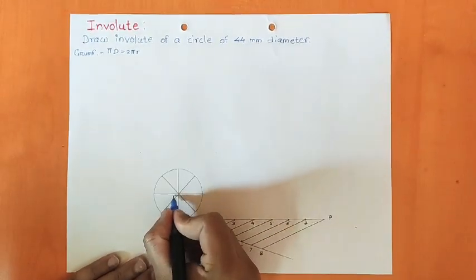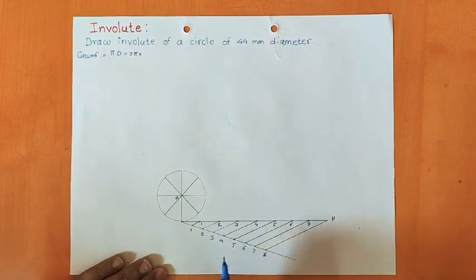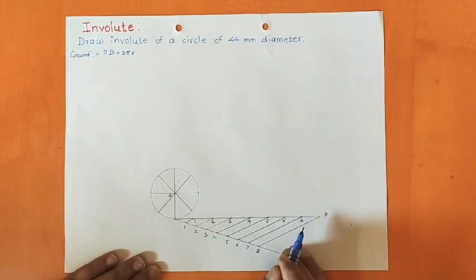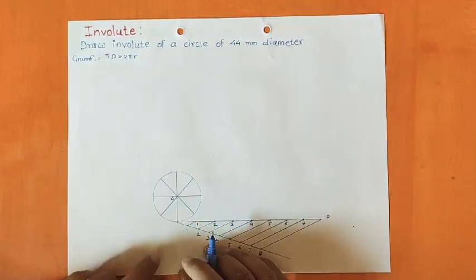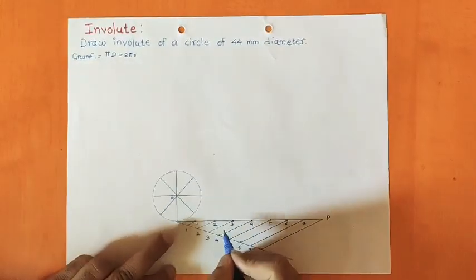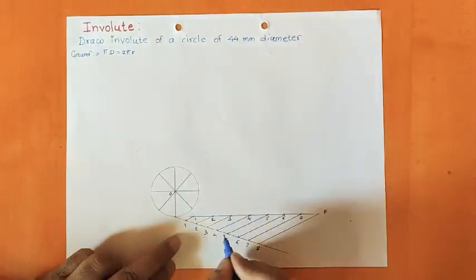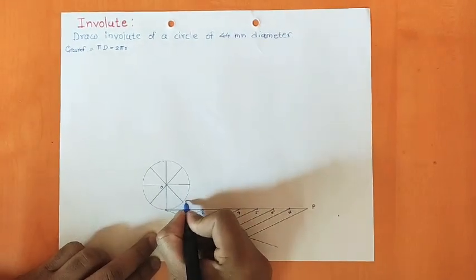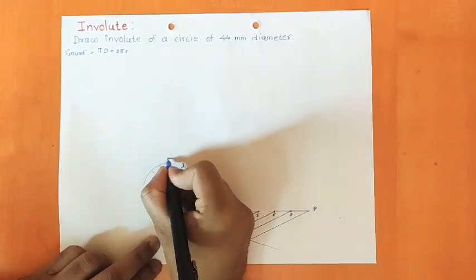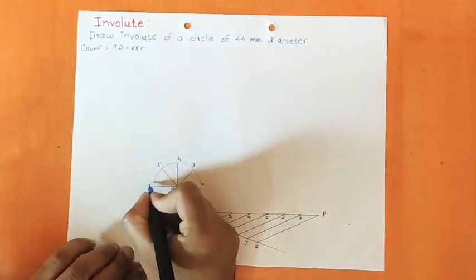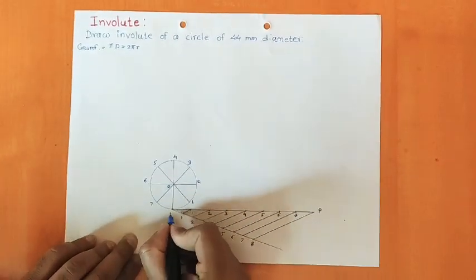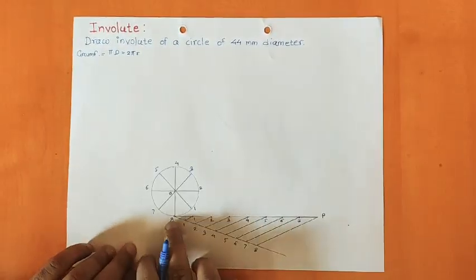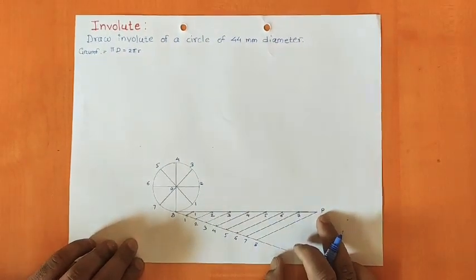Now name the points on the circumference of the circle. As we are going to wind the thread in the anti-clockwise direction, the point next to the bottom point is named 1, then 2, 3, and so on — giving numbering in anti-clockwise direction, with the last being point number 8. If you are dividing the circle into 12 equal parts, then divide the π×d distance into 12 equal parts accordingly.